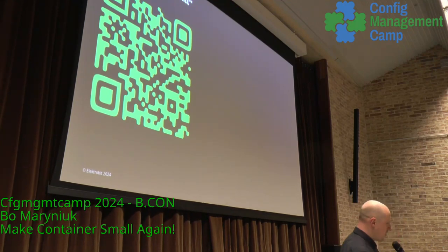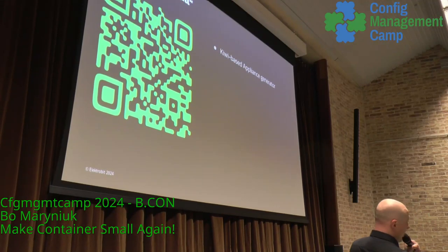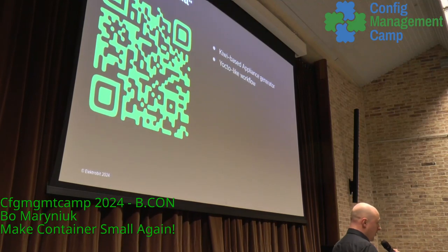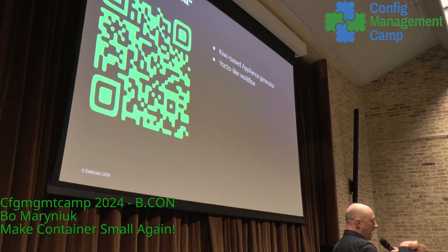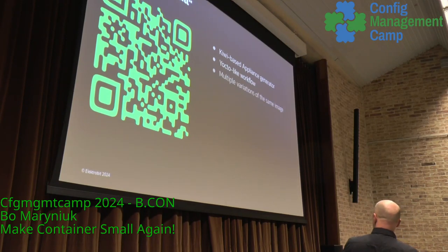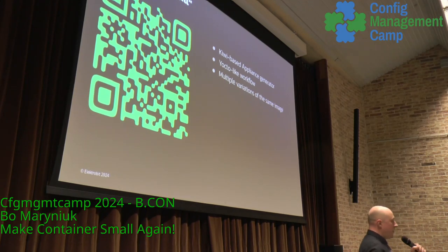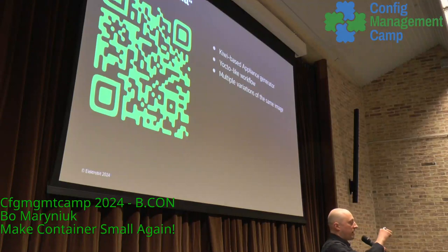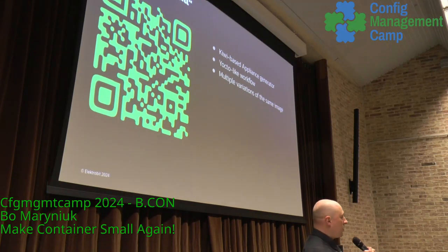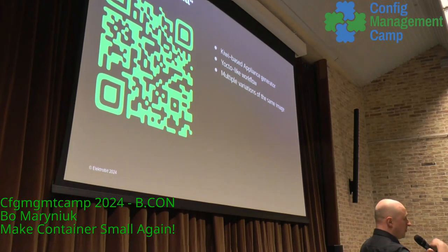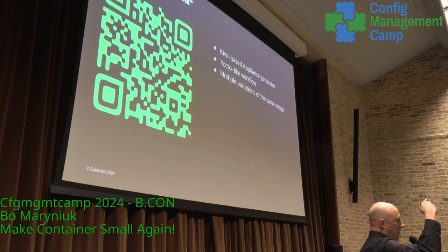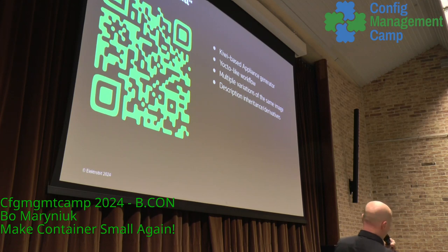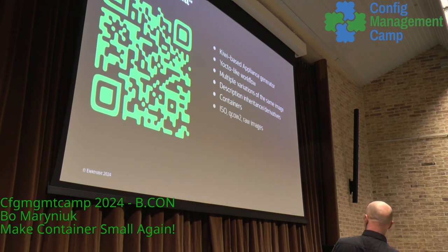What does Bremil do, apparently? It's our sub-project. It just wraps around the Kiwi Appliance. It adds a Yocto-like workflow, so if you are familiar with Yocto, now you can also use the package-based system with a Yocto approach. It also gives you multiple variations of the same image. In Kiwi, you always have the image description in XML inside, and if you want to change something you have to change the image. If you want a couple of images, you have to do carbon copy again and again. So there's something we don't like, and we made some extensions — you can subclass that, like in Python, you can subclass the class and change whatever you want. So we have this description with inheritance and derivatives. We can also make containers with it and do whatever other stuff.